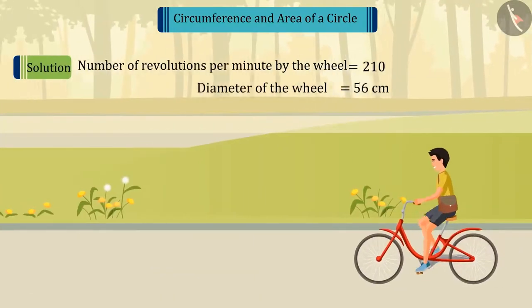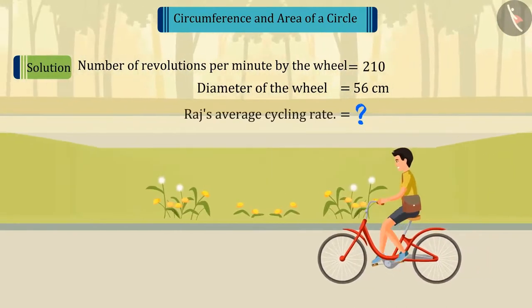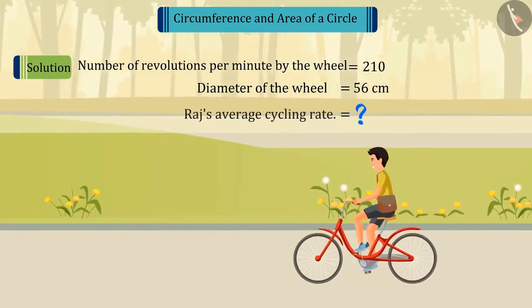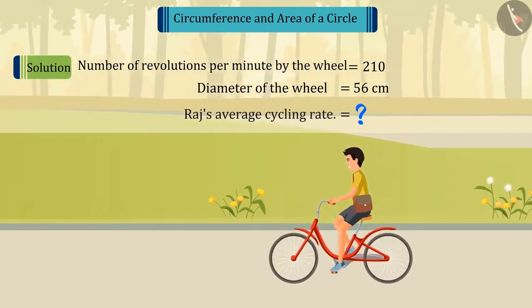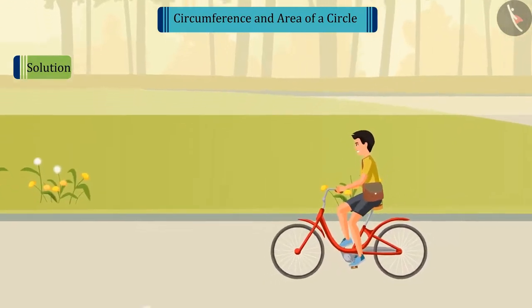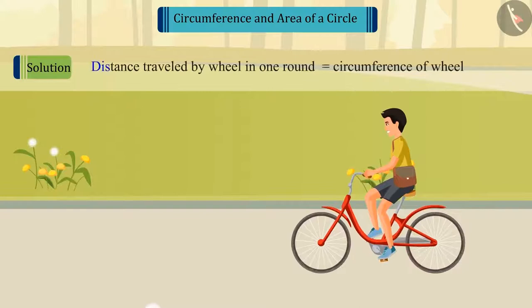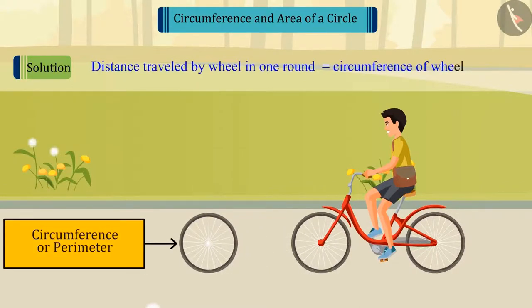The speed at which Raj is cycling is related to the distance traveled by the cycle in one round. Therefore, the distance traveled by a wheel in one round is equal to its circumference.